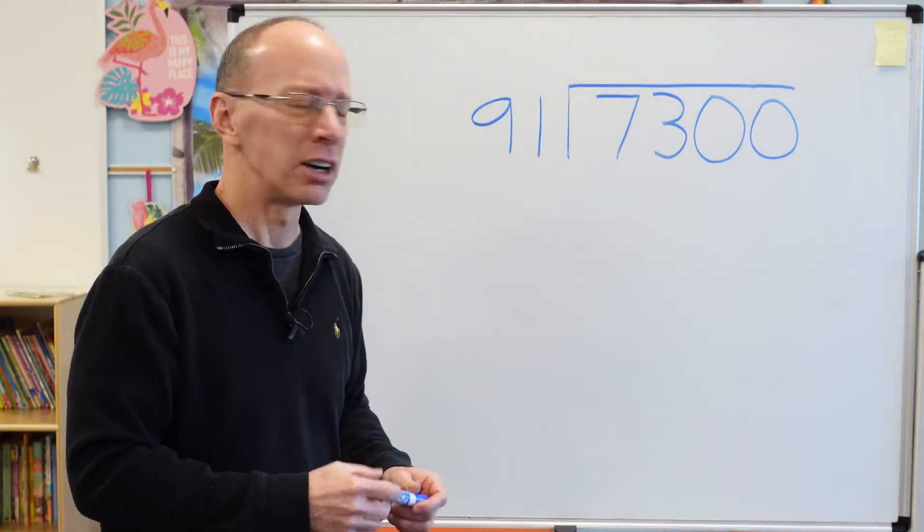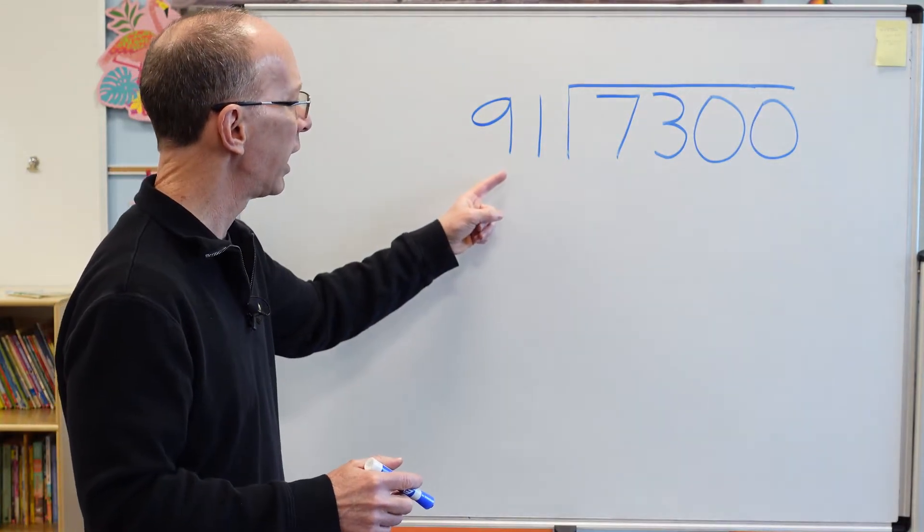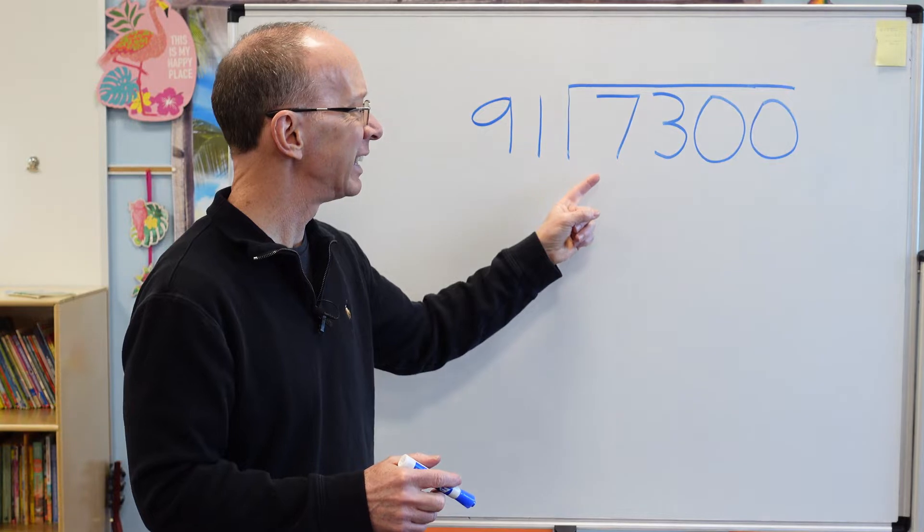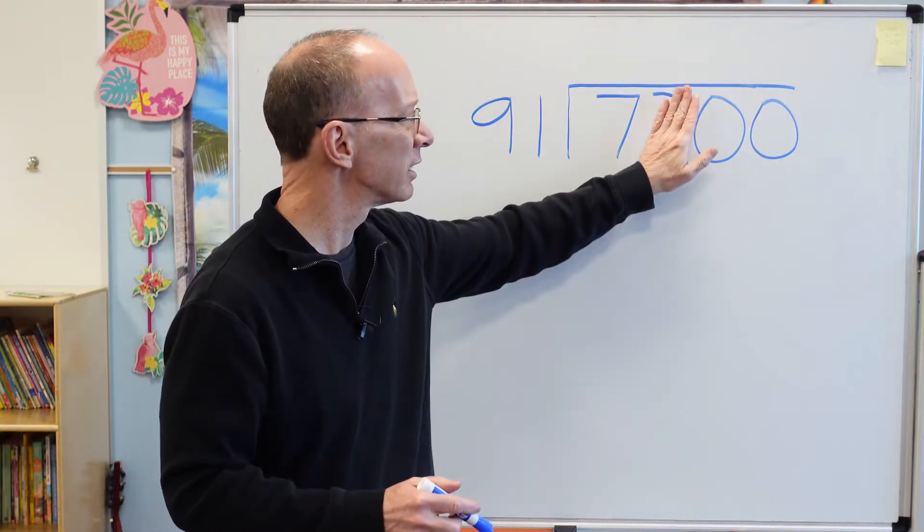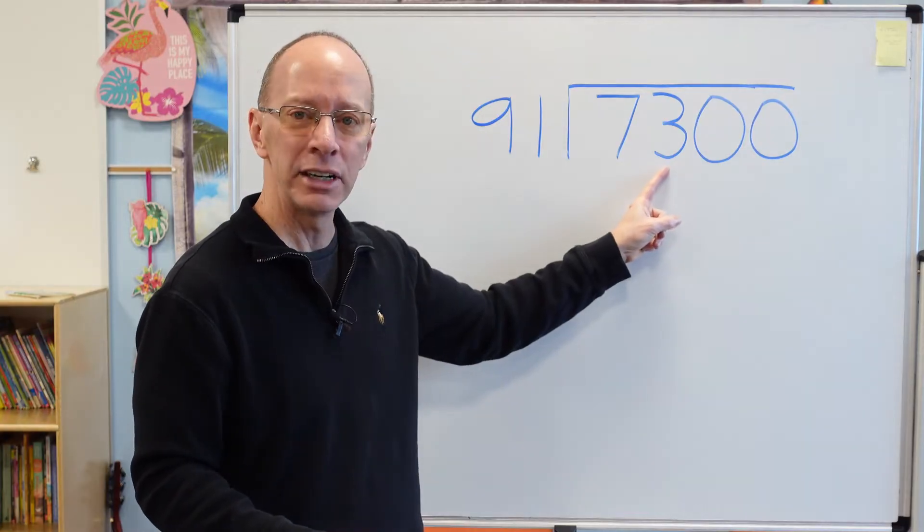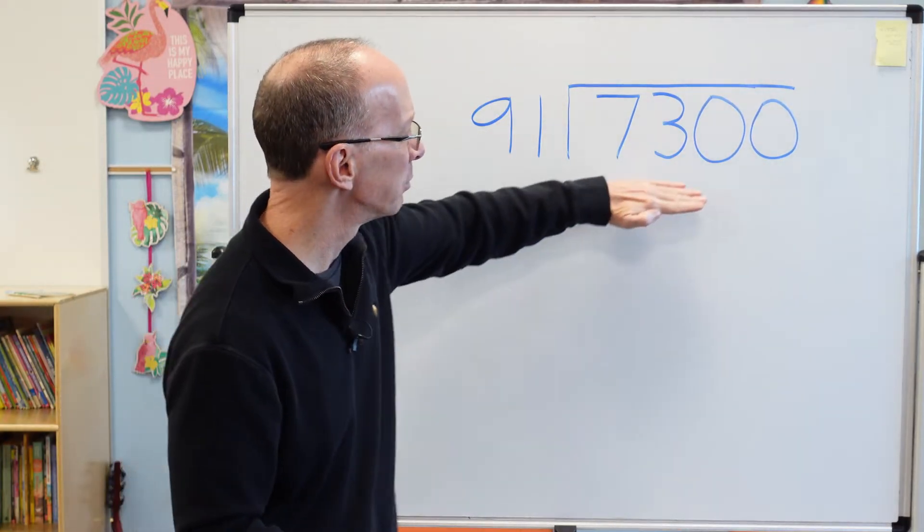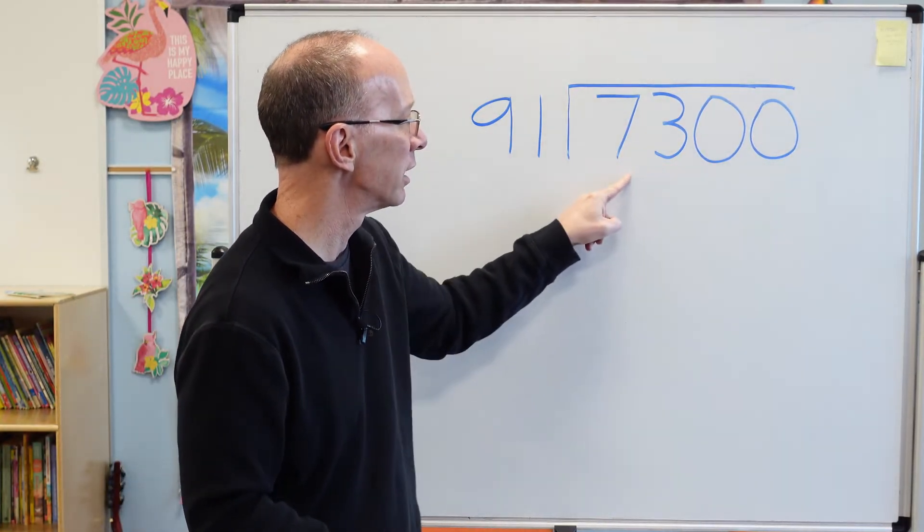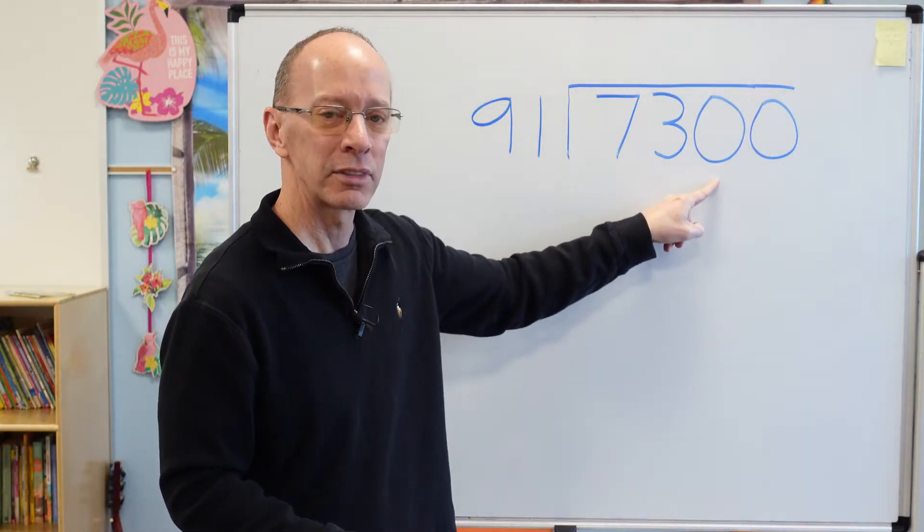Alright, let's go ahead and get started here. So I have to put 91 into this big number. Can I put it into 7? Can't do it. Can I put 91 into 73? Still can't do it. So I need to move over to these numbers here, 730.